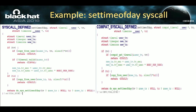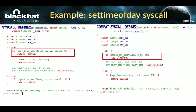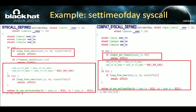This is an example of the settimeofday syscall. On the left side is the 64-bit system call, and on the right side is the compat mode system call. On the left, the user timeval structure is directly copied into the kernel timeval structure using copy_from_user. On the right, the type of the user parameter is compat_timeval, which differs from the kernel structure timeval. So the compat version uses a function called compat_get_timeval to convert the user compat_timeval structure to the kernel timeval structure. We can also notice there is duplicate code in these two functions — this part of the code is the same.